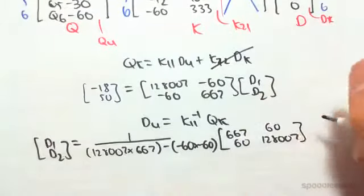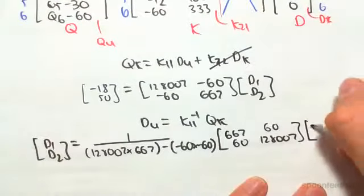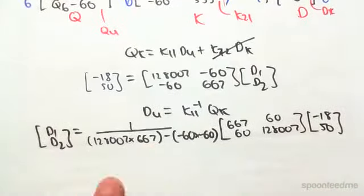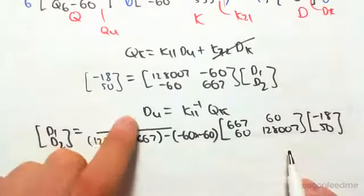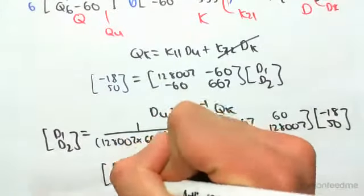Times Q known, which is [-18, 50]. If you solve this—this row by this column, this row by this column—and divide through by the determinant, you would find that D1 and D2